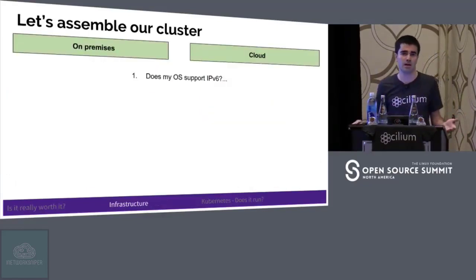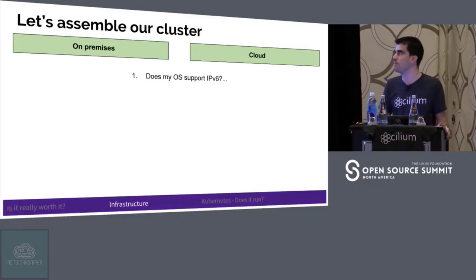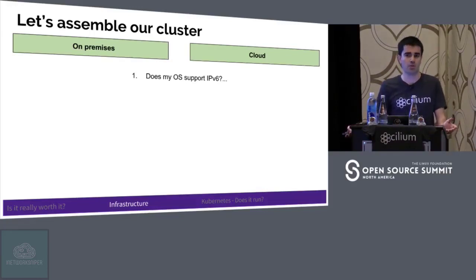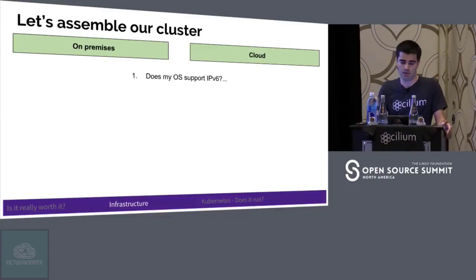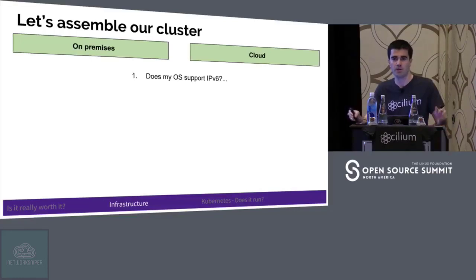So let's go assemble an IPv6 cluster. You usually end up with two options in the beginning: you either deploy it on-premises or you deploy it on the cloud. And the first question you might be wondering is whether your operating system supports IPv6 or not. As I've shown, Linux has had a stable version of IPv6 since 2005. And if you are not upgrading your Linux since 2005, I think you have worse problems than to worry about IPv6.